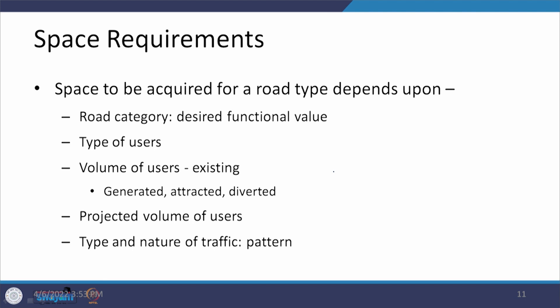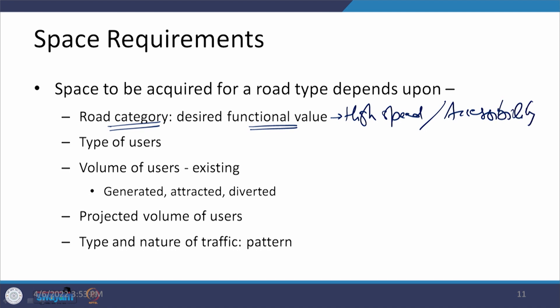Now that we have an idea about all of these things, let us look at the space requirements. In the case of space requirements, first of all we are talking about the factors which are going to make a difference. The very first thing is road category — are you going to design an expressway or a local road in an urban area? Or we can talk in terms of functional value — are you interested in providing a high-speed facility or a facility for accessibility to a remote area where traffic is not so high? These are going to define how much space is required to construct a particular road.